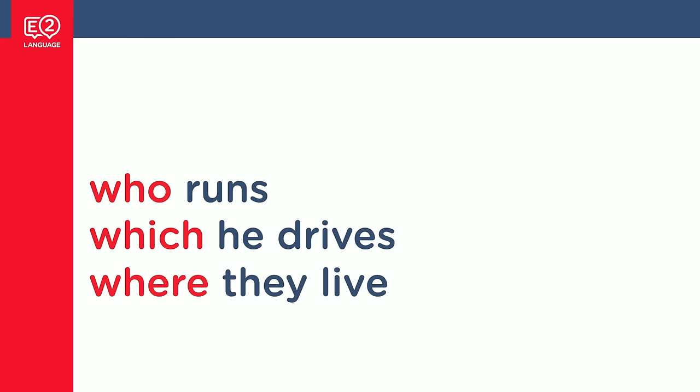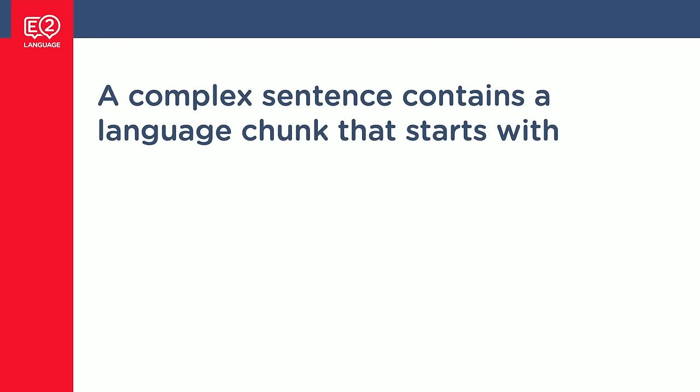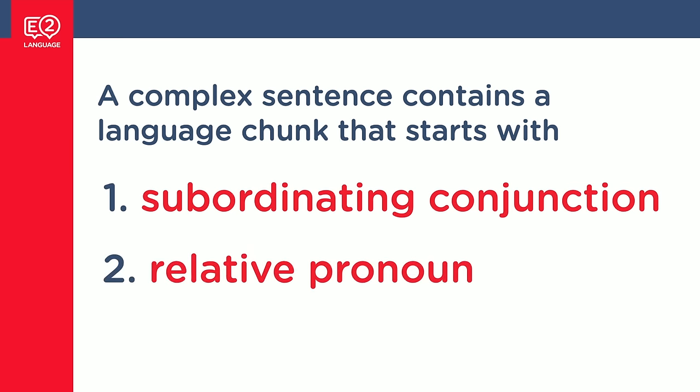Let's see one more type: 'Who runs?' 'Which he drives?' 'Where they live?' These are still clauses because there's a subject and a verb, but they start with a relative pronoun — who, which, where. So these are relative clauses. So a complex sentence contains a language chunk that starts with a subordinating conjunction or a relative pronoun. Now we're going to come back to this, so don't worry just yet. Let's start with simple sentences and go from there.